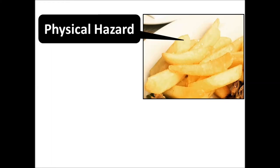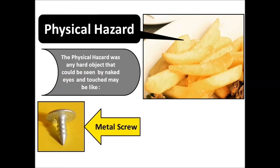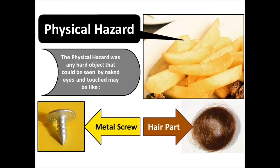The physical hazard — first we must know its definition. A physical hazard is any hard object that could be seen by the naked eye and touched, such as a metal screw while frying potato, or even hair from workers who were cooking or frying. They must take care of their hair. We will explain the types of physical hazards later on Simply Foodia. As you can see, there might be a physical hazard in the potato.